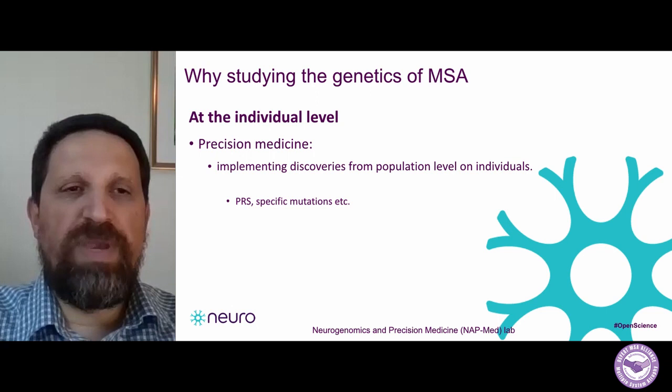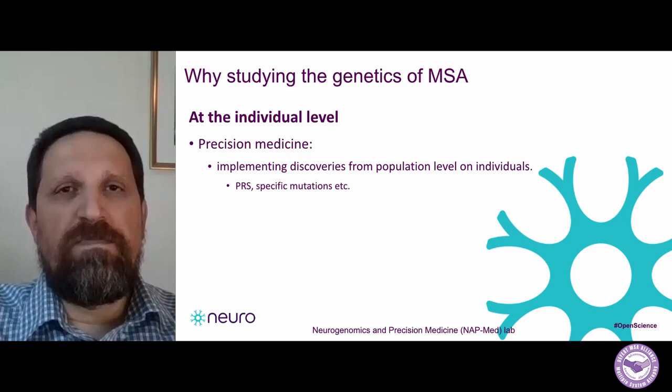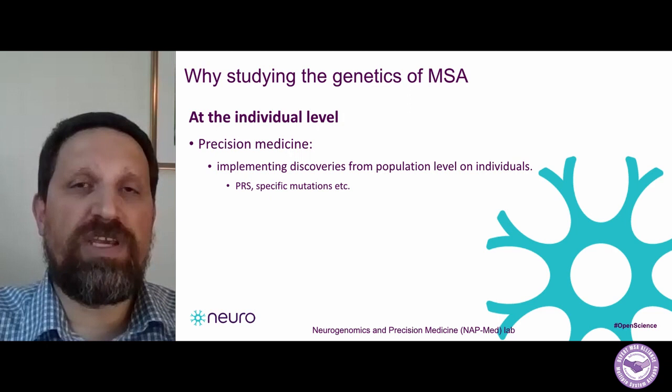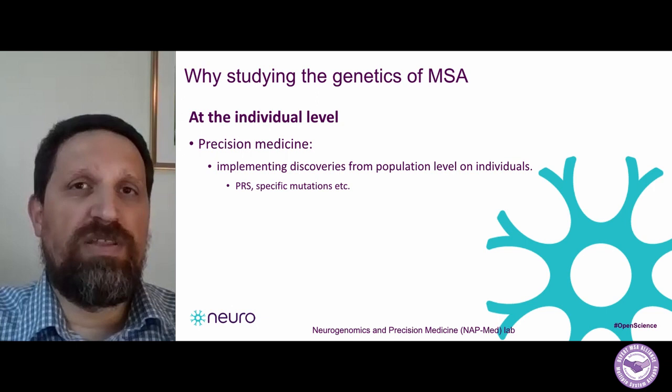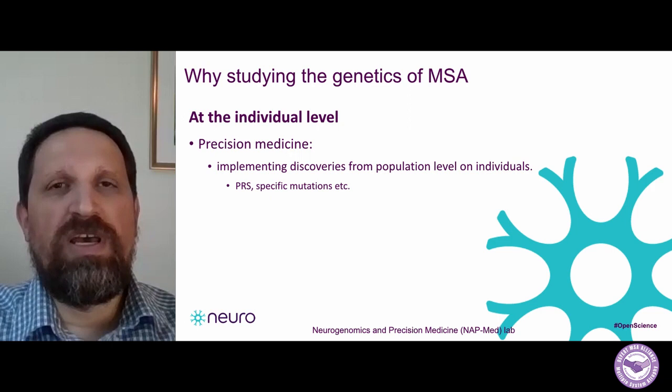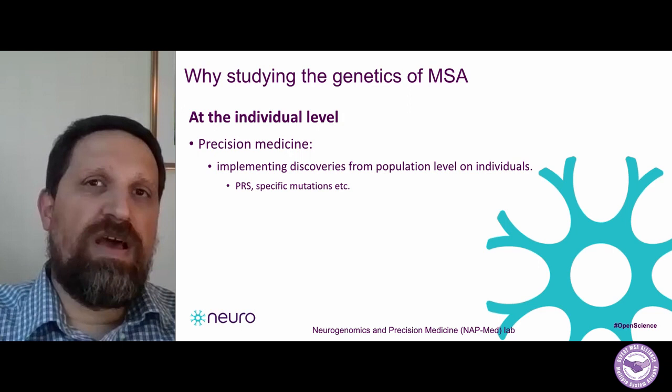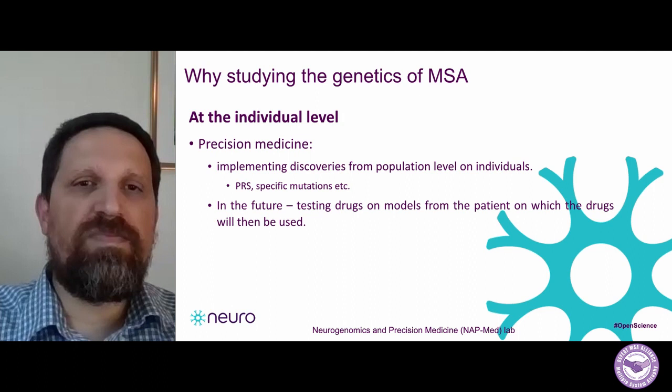I'll give you an example from Parkinson's disease. The polygenic risk score (PRS), which I mentioned before, is also something we can use at the individual level — we can give a score that reflects the genetic risk of each individual based on the different variants they carry in their genome. Each individual has a score that can predict to a certain degree how much they are at risk to develop a disease. In the future, one direction people are aiming at is to use tissues from patients, test their genetics, and based on these genetic tests, try different medications on that tissue collected from the patient.